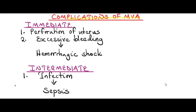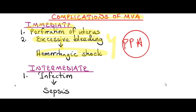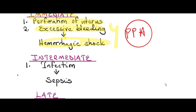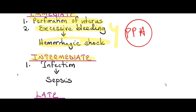Complications of manual vacuum aspiration - immediate complications: whilst you're doing your manual vacuum aspiration, you can perforate the uterus if you're too overzealous. As you are doing your aspiration, there could also be excessive bleeding, which can result in hemorrhagic shock - this can also be termed as PPH, postpartum hemorrhage.